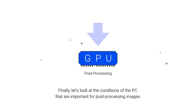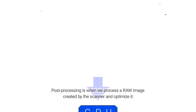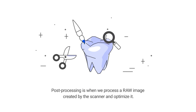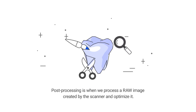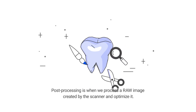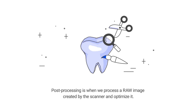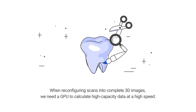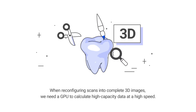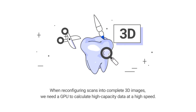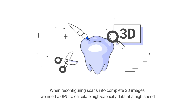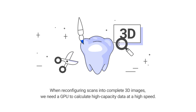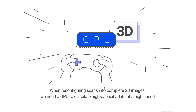Finally, let's look at the conditions of the PC that are important for post-processing images. Post-processing is when we process a raw image created by the scanner and optimize it. When reconfiguring scans into complete 3D images, we need a GPU to calculate high-capacity data at a high speed.